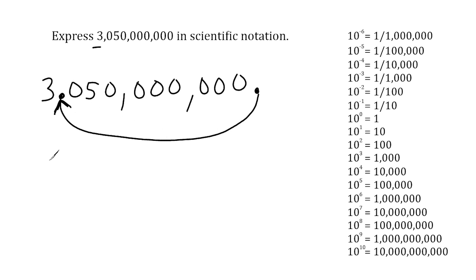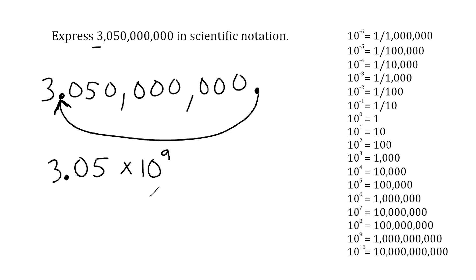To get the decimal from the end all the way to after the 3, we would have to move 9 place values. So we write 3 point — then everything after the decimal until we reach ending zeros — so we write the zero and then the 5, and stop because everything after the 5 is ending zeros. We always write a base of 10, and the exponent represents how many place values we moved: 9. Another way to say this is 3.05 times 1 billion, and multiplying by 1 billion gives us 3 billion 50 million.